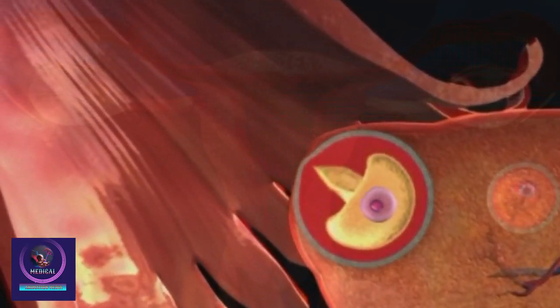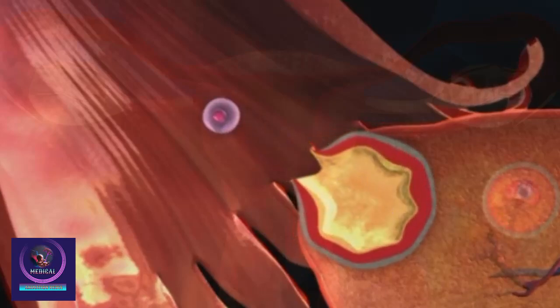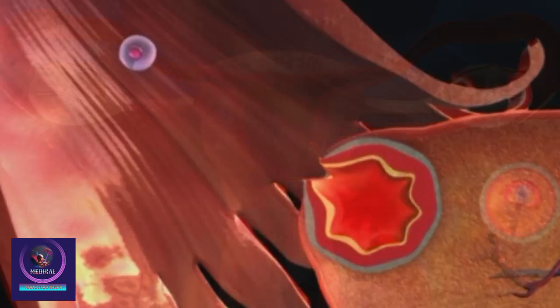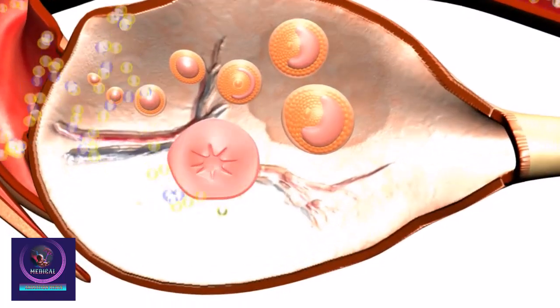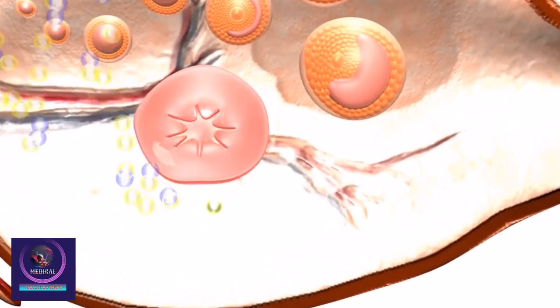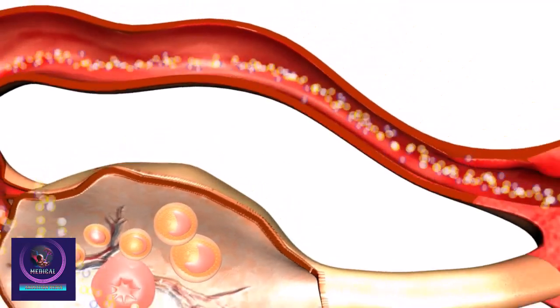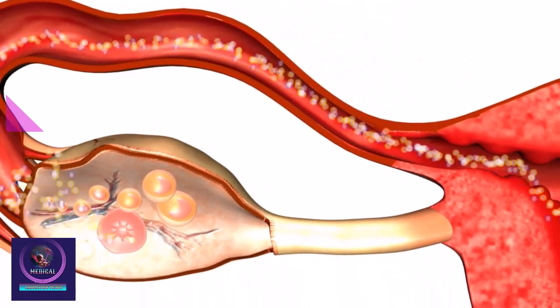A surge of hormones causes this follicle to break open and release the egg. The egg is swept into the open end of the fallopian tube, where it travels to the uterus. This process of releasing an egg from the ovary is known as ovulation.